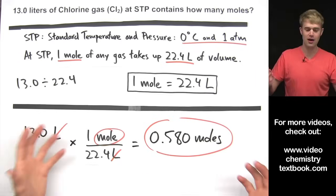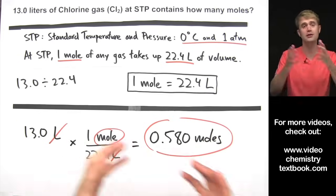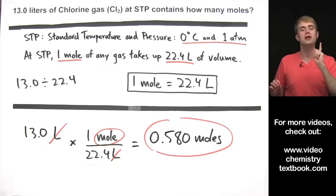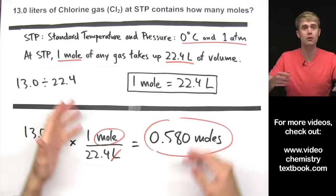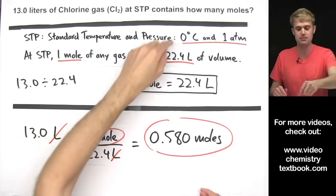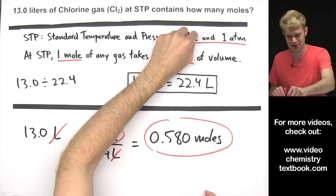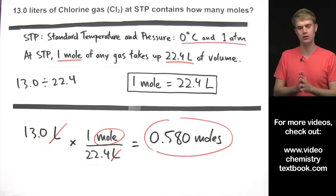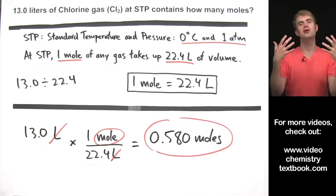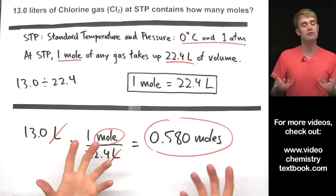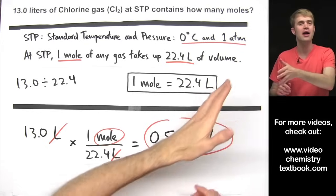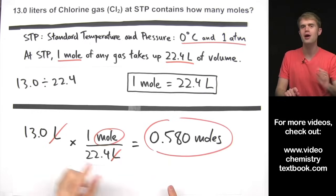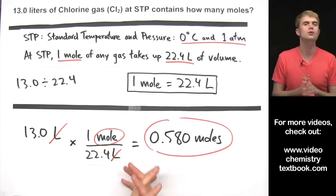So that's how you convert back and forth between moles and liters of a gas at STP. Two things to always keep in mind: first, make sure the problem states you're at STP — 0 degrees Celsius and 1 atm. If you're not at those conditions, you can't use the 1 mole = 22.4 liters relationship. Second, make sure you're talking about a gas. Even at STP, if it's a liquid or a solid, you can't use this relationship. Keep your eyes open so you don't get tripped up.